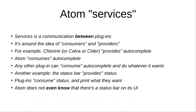For example, a Clojure REPL plugin provides autocomplete and Atom consumes it. Any other plugin can consume autocomplete and do whatever it wants with that data. The best example is the status bar — it provides status for plugins and other plugins consume it and add information. The Atom editor doesn't even know there's a status bar on the UI — it's simply a plugin drawing on the screen.